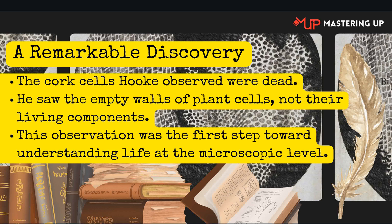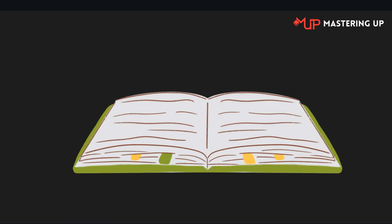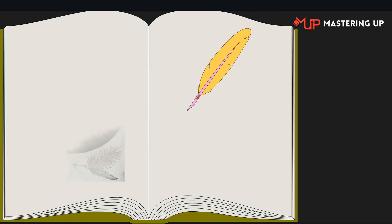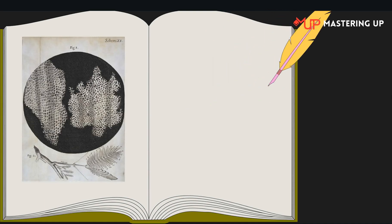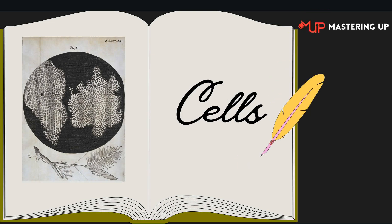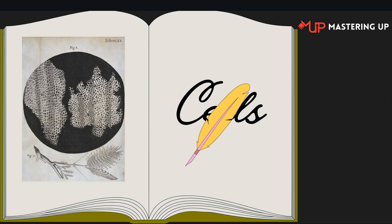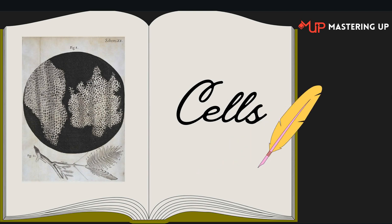However, there is an interesting twist to this story. The cells Hooke observed were actually dead. The cork cells he studied were simply the empty walls of plant tissue. The living parts of the cells had long since disappeared, leaving only the rigid structure behind. At the time, Hooke didn't realize the full significance of what he had discovered. He thought of cells as structural units, not as the living, dynamic building blocks of organisms that we know them to be today. But even this early observation was groundbreaking, as it opened the door to understanding the microscopic structure of plants and other living things.